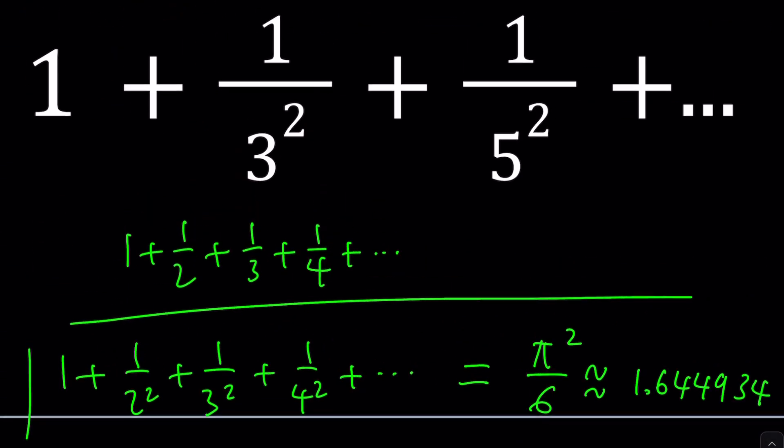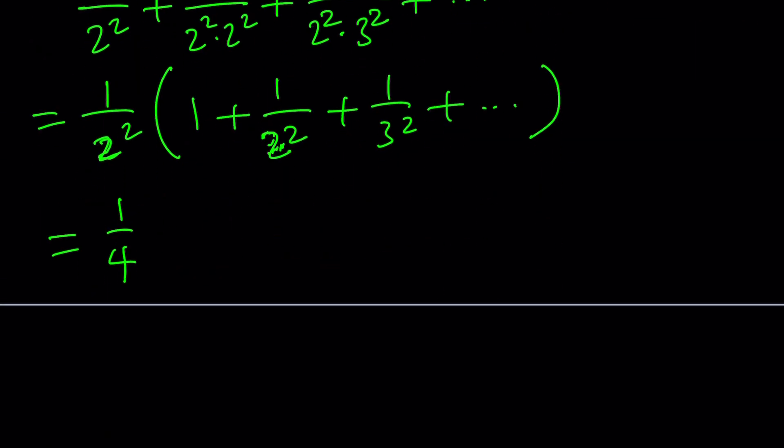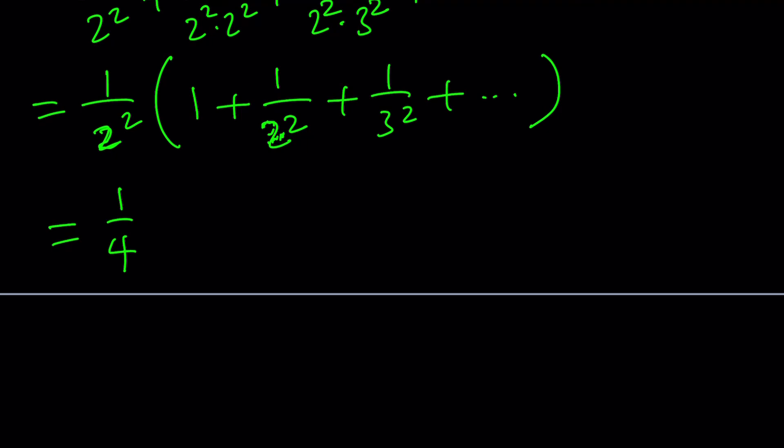So 1/2² is 1/4, and the sum inside the parentheses is the Basel problem, which equals π²/6. Replacing this, we get π²/24.